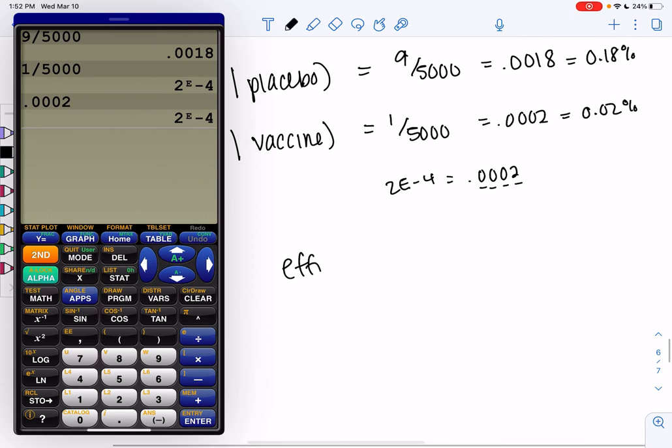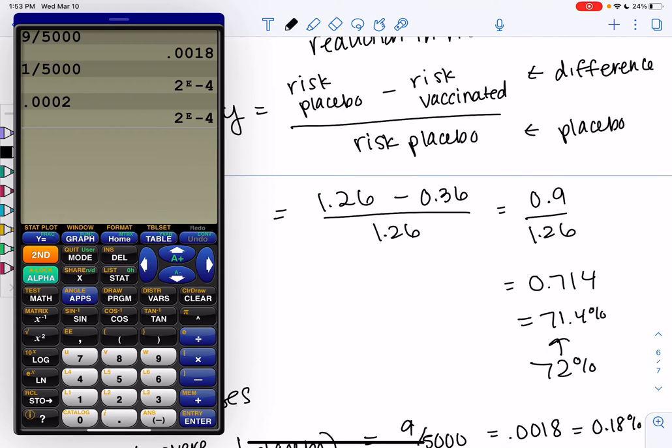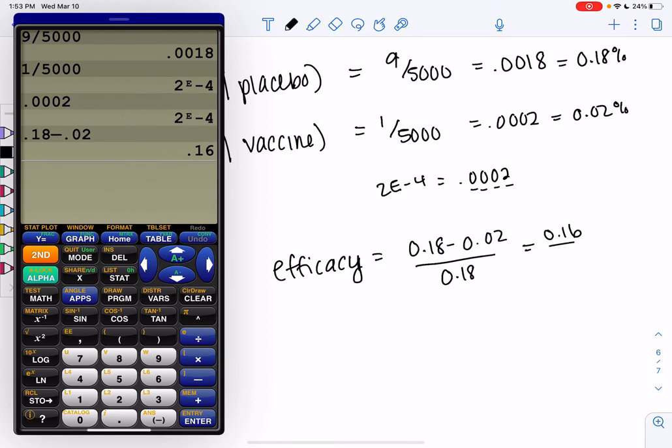And so then efficacy, same idea. So we'll just do the risk with the placebo minus risk of vaccinated, and then we'll just divide by the risk of the placebo. So how much is it reducing our risk? So it reduces by 0.16, and then we divide by 0.18. And we get 88%.